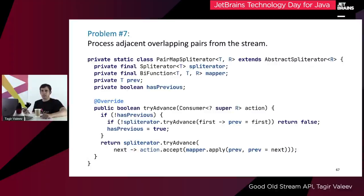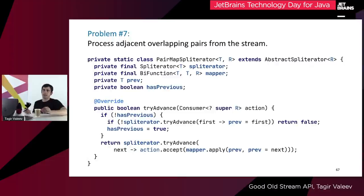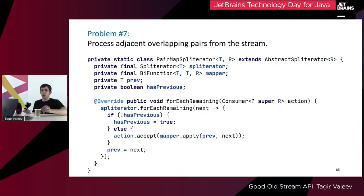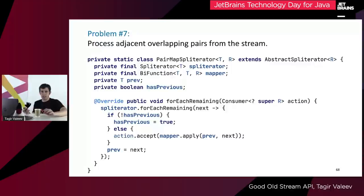Now we implement the tryAdvance method — it's like iterator hasNext and iterator next merged together. If we have one more element, we pass it to the consumer and return true; otherwise return false. The implementation checks the hasPrevious flag, updates the previous value, and supplies the previous and current element to the mapper. If you are creating your own Spliterator, I strongly recommend also implementing the forEachRemaining method. This consumes all remaining elements in cases where short-circuit behavior is unnecessary. Even if your tryAdvance is optimal, the tryAdvance of the original Spliterator could be much less optimal. By delegating forEachRemaining to the original Spliterator's forEachRemaining, non-short-circuiting operations may become considerably faster.